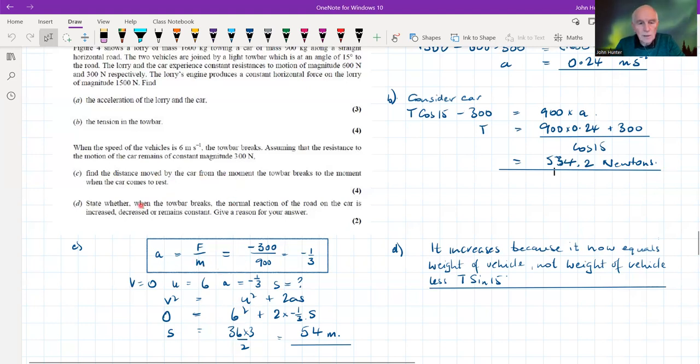State whether when the tow bar breaks, the normal reaction of the road on the car is increased, decreased, or remains constant. The normal reaction of the road on the car, the amount the road is pushing up on the car.